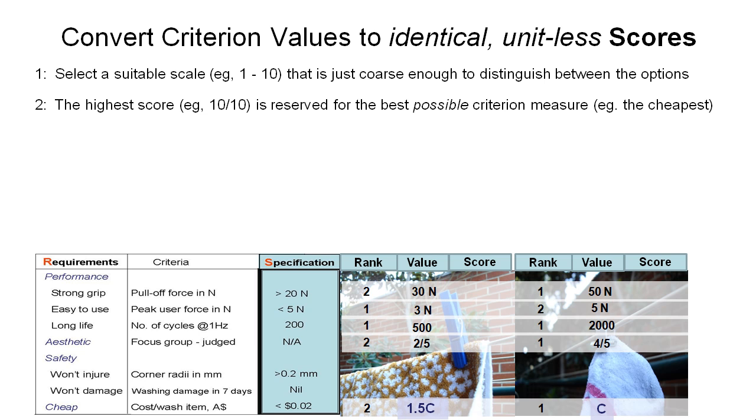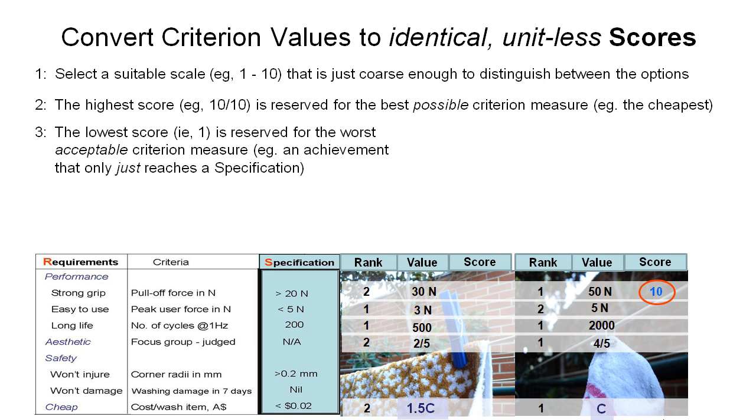So obviously the highest score possible is going to be 10 out of 10. So we reserve that for the best possible criterion measure. So for cost it's going to be the cheapest. For strong grip, the strongest grip that we can imagine our device being able to apply to the washing. So we might think that 50N is quite a strong grip and there's no device out there that we could possibly conceive of that's going to be better than that. So we're going to give that a score of 10. The lowest score is going to be reserved for the worst acceptable criterion measure. And so that's important to note, the worst acceptable criterion measure.